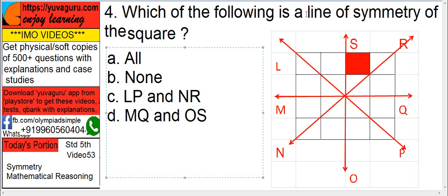Which of the following is a line of symmetry for the given square? A square is given — which is a line of symmetry?